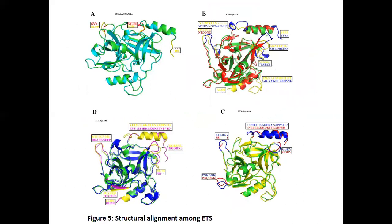We performed structure alignment with other exfoliative toxins present in Staphylococcus aureus. You can see they align well with each other, although there are some differences in their structure and amino acid residues in certain regions.